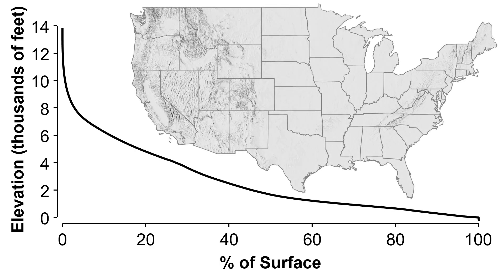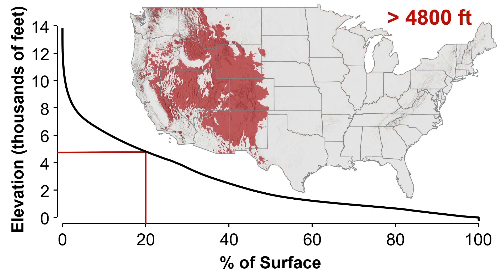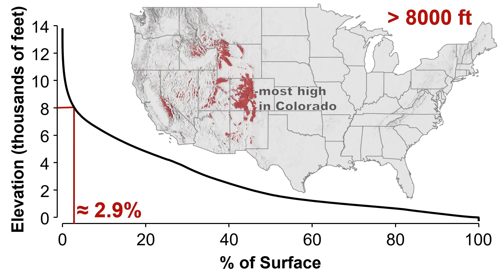Reading from the horizontal axis first, you can find that 80% of the U.S. lies above 650 feet, or that 20% of the U.S. lies above 4,800 feet. Or reading from the vertical axis first, you can find out how much area exceeds any elevation of interest. Using 8,000 feet, for example, you can find that that elevation is exceeded by a little less than 3% of the U.S. surface area.